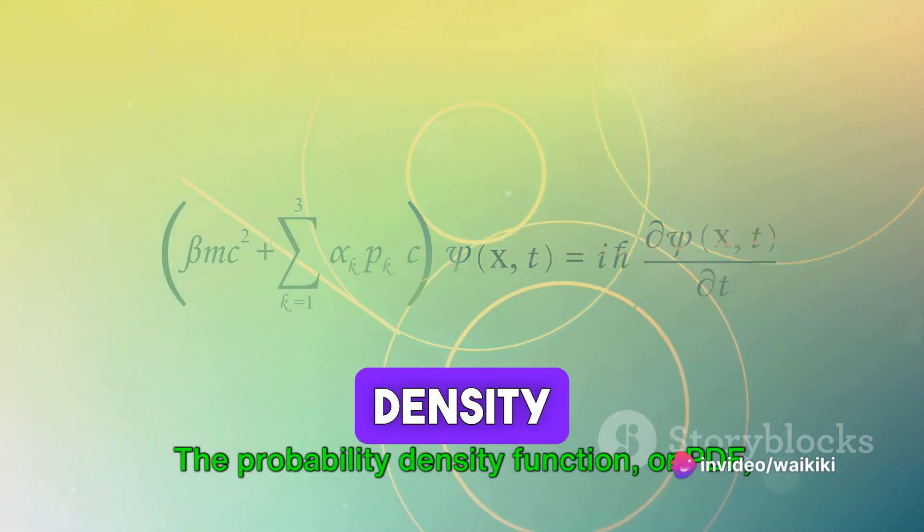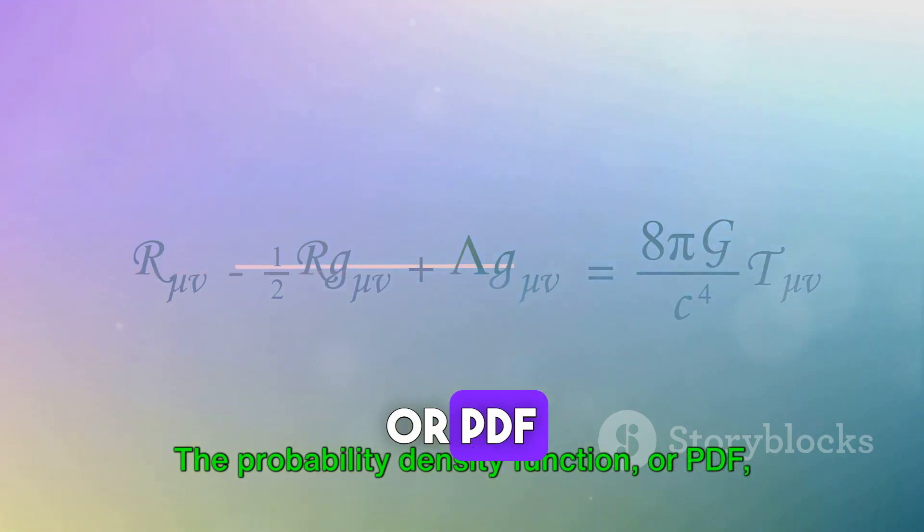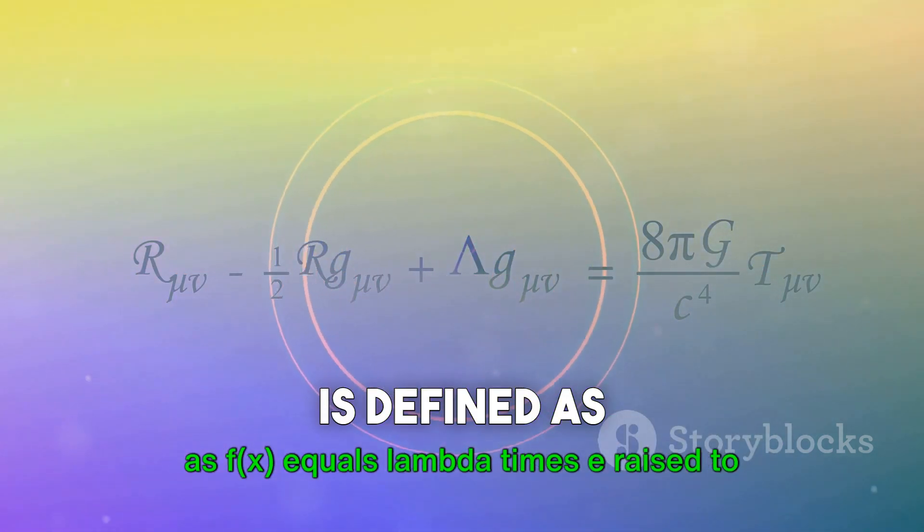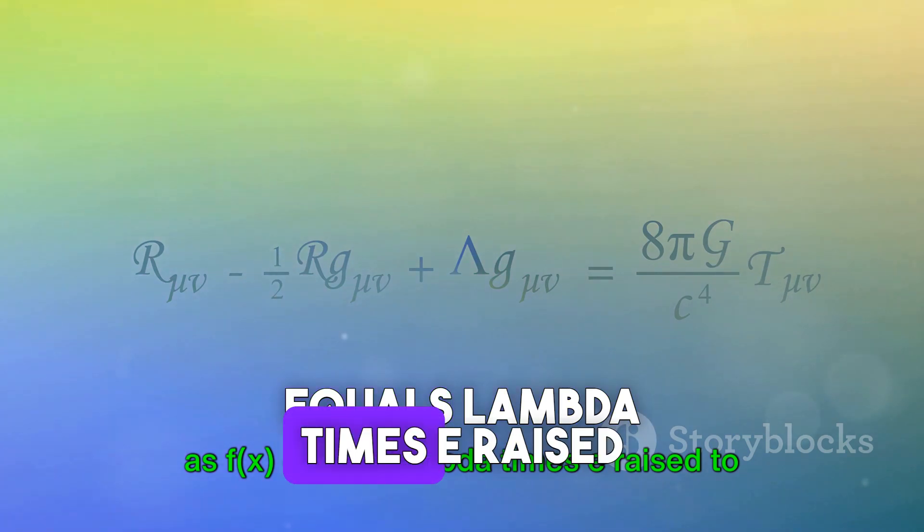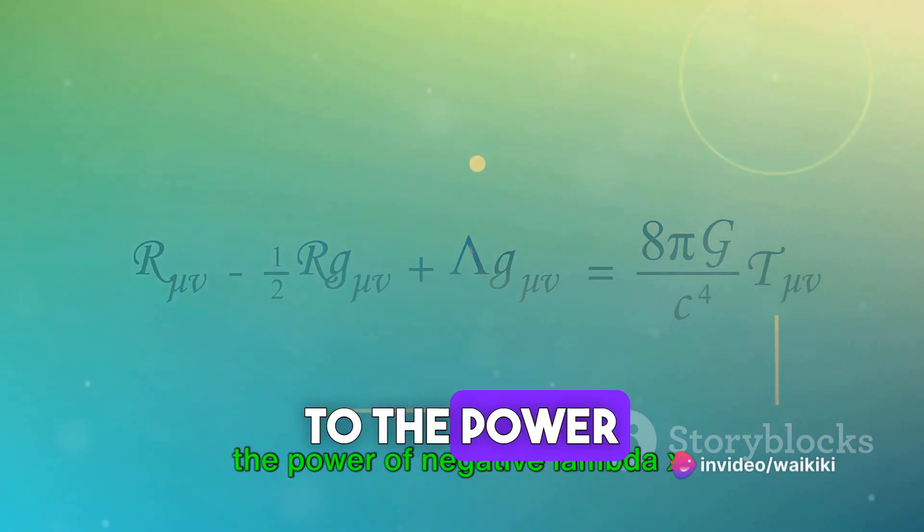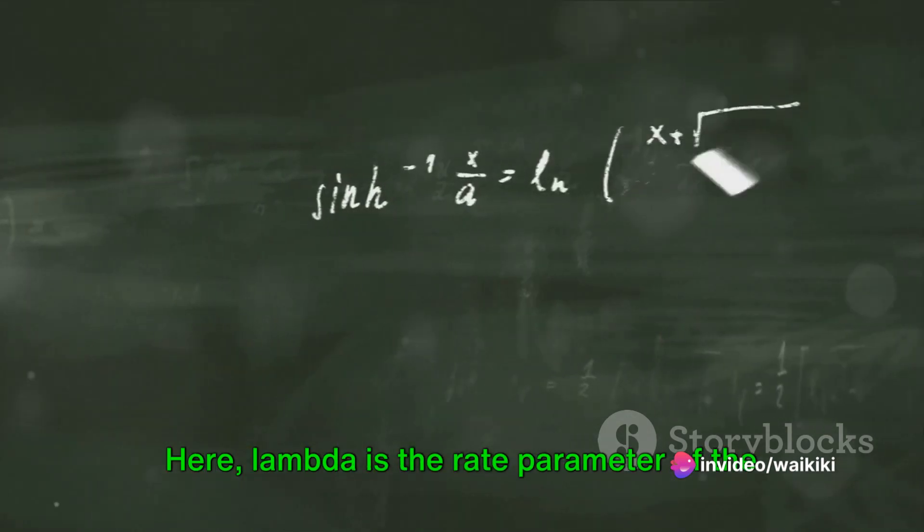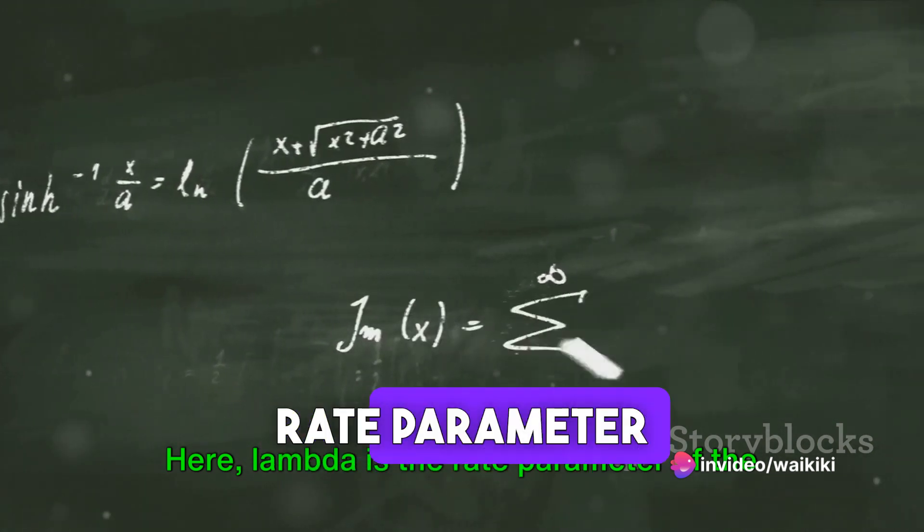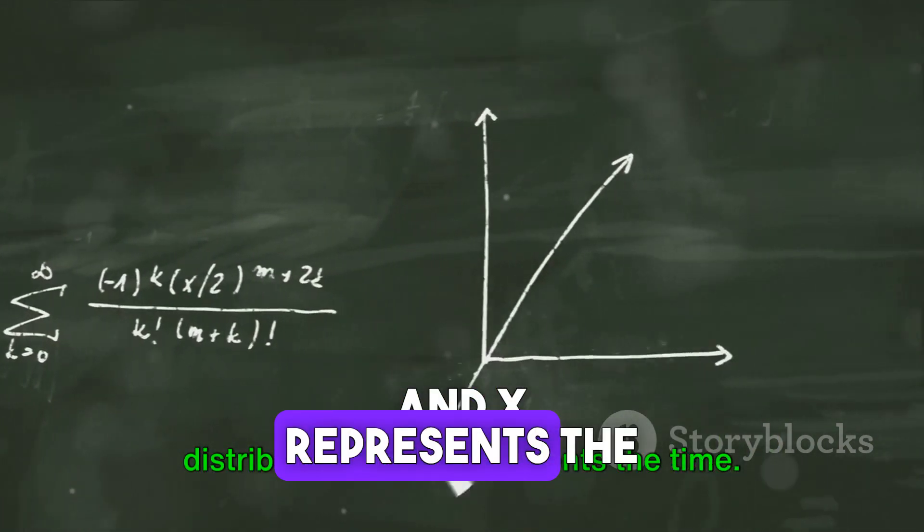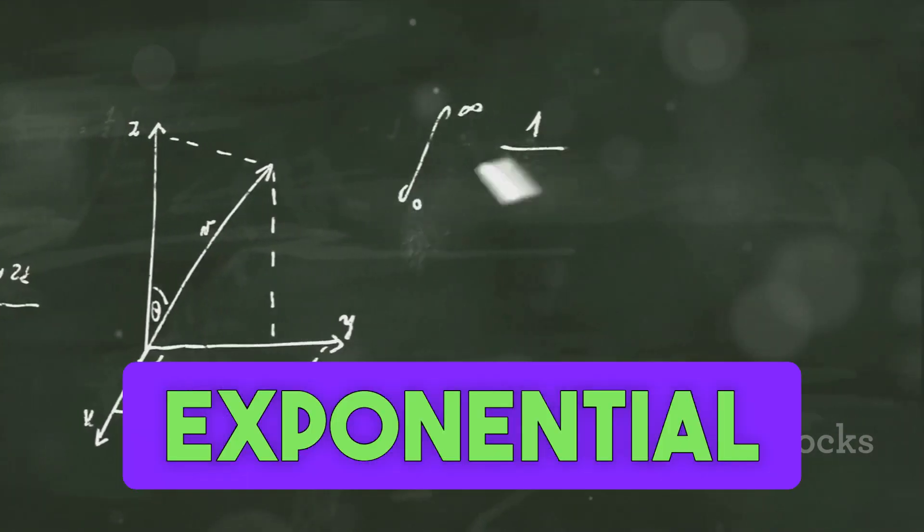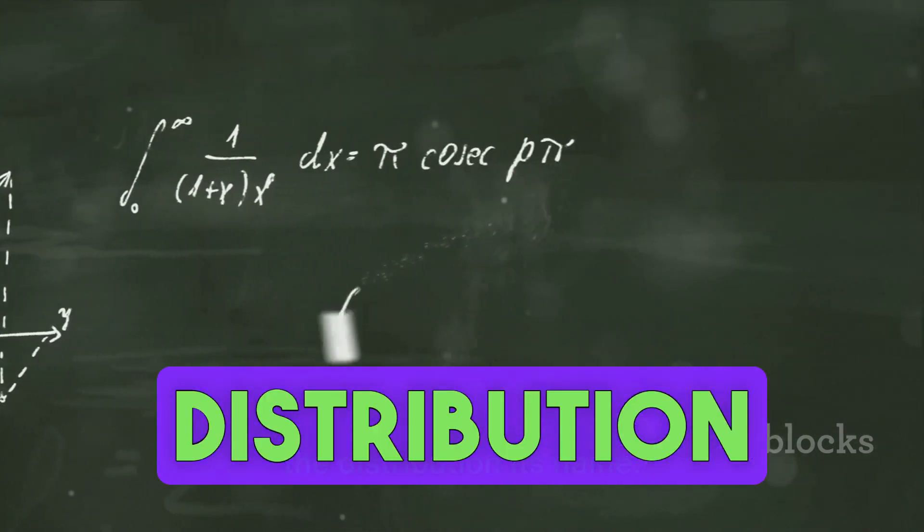The probability density function, or PDF, of the exponential distribution is defined as f(x) equals lambda times e raised to the power of negative lambda x. Here, lambda is the rate parameter of the distribution, and x represents the time. It's this exponential function that gives the distribution its name.